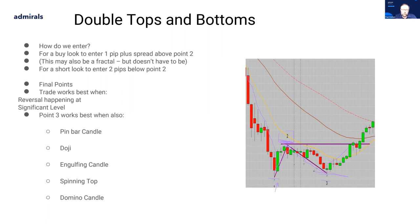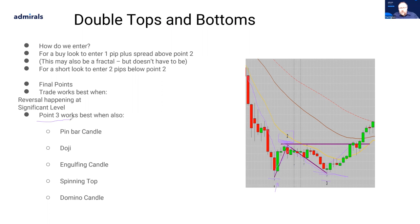The trade generally works best when the reversal is happening at a significant level — things like previous days' highs and lows, previous weeks' highs and lows, a level of support/resistance, or a big round number. When we see a double top or bottom pattern starting to appear there, that is when we get interested. That's a confluence of events — something I talk about a lot — that can help us enormously.